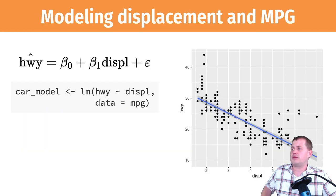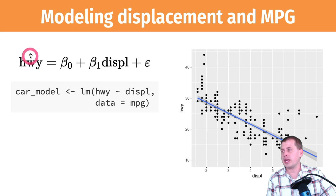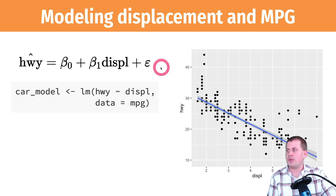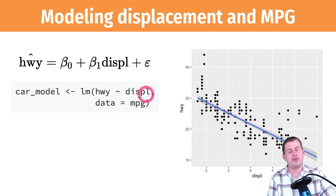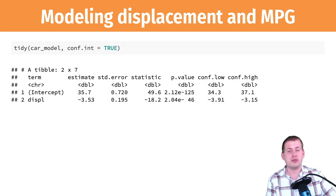Let's show an example. We want to model the relationship between displacement and highway miles per gallon. In stats language: predicted highway = β0 + β1·displacement + error. The way we do this in R is we make a new object called car_model using lm(), where highway ~ displ, using the mpg dataset. That's all we have to do to build a model in R.